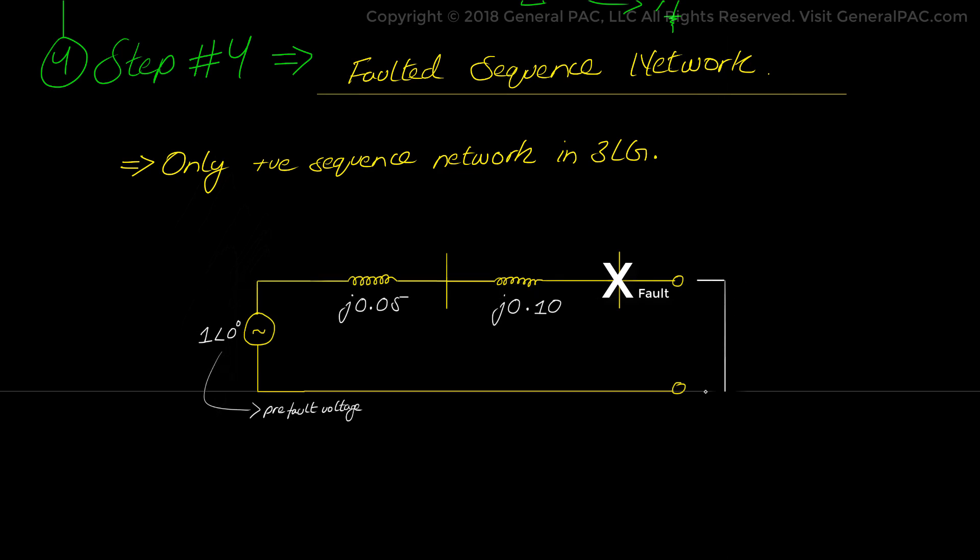we will only have a positive sequence network and that positive sequence network is going to be connected during the faulted condition. Now this is pretty trivial here but the diagram shown represents that positive sequence network diagram and we don't have any other interconnections. But this step is important to realize because in the other faults we do interconnect the individual sequence networks.